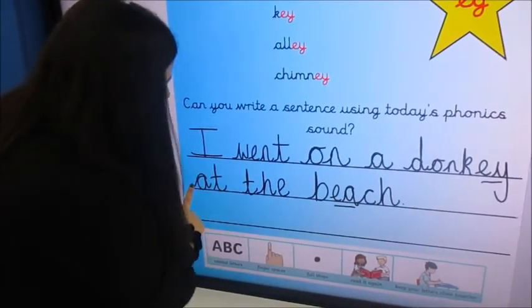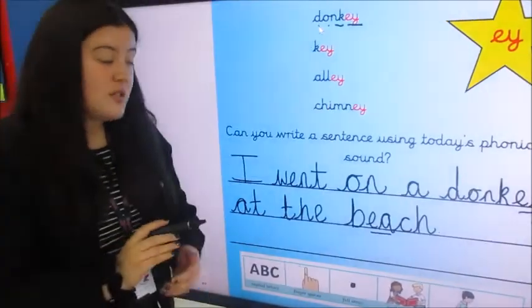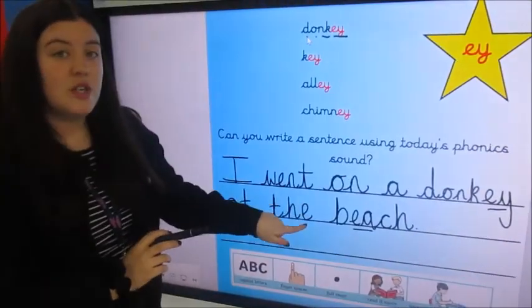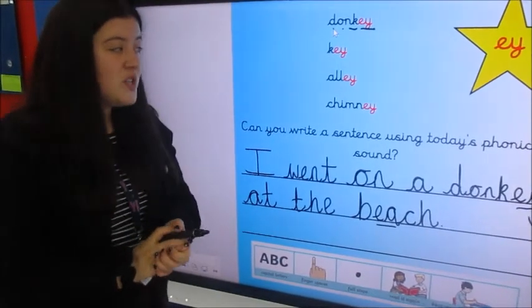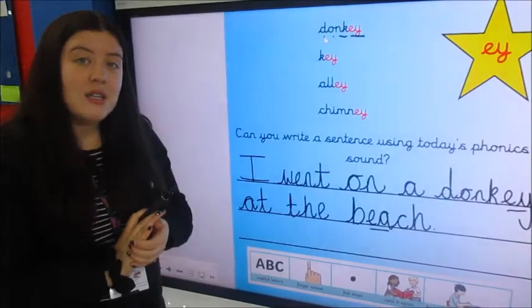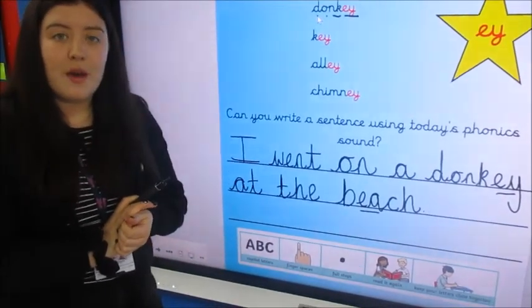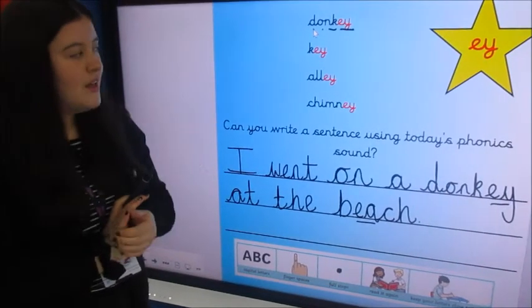Read the sentence again. I went on a donkey at the beach. And that's a really good example today because I've got a sentence with two different spellings of the same sound, which is what phase 5 is all about. So the more we read, the more we write, the more we're going to remember which spelling it is for which sound.